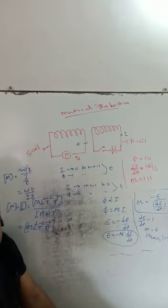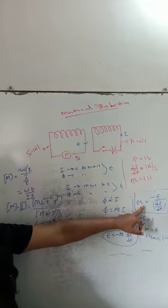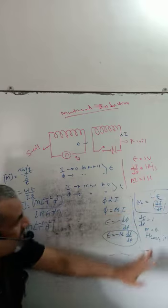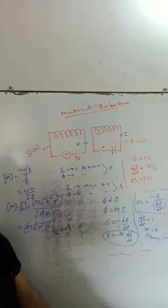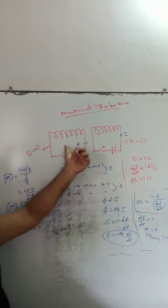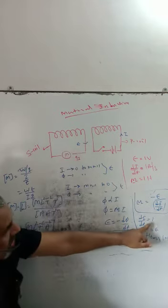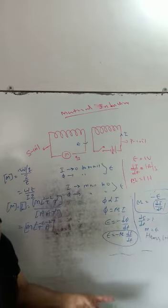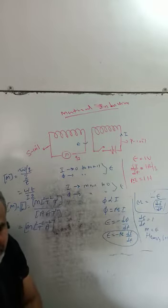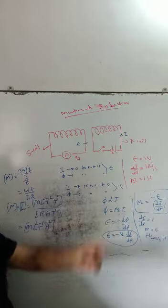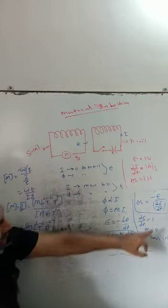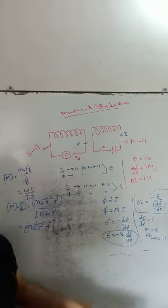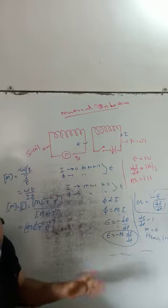What is the definition of mutual inductance? Using this equation, when dI/dt is equal to 1, then M is equal to epsilon. So: an EMF induced in the secondary coil due to unit rate of change of current in the primary coil is called mutual inductance or coefficient of mutual induction. An EMF induced in one coil due to unit rate of change of current in the other coil is called mutual inductance or coefficient of mutual induction.